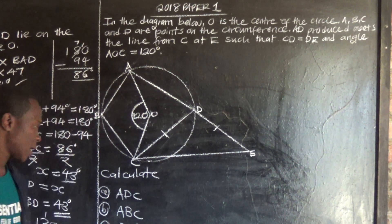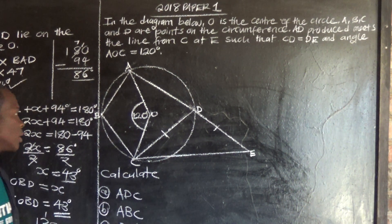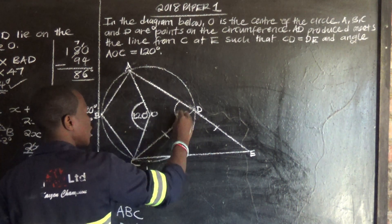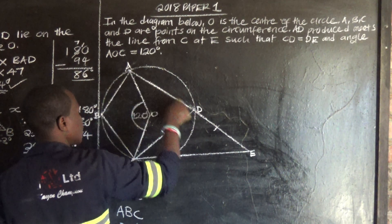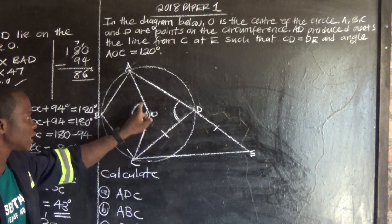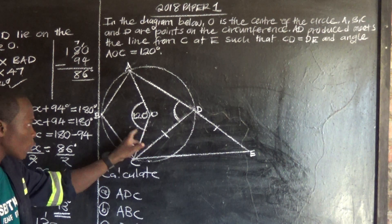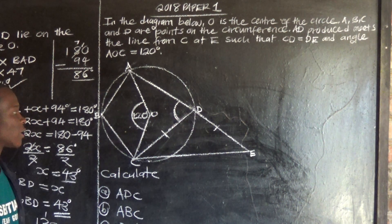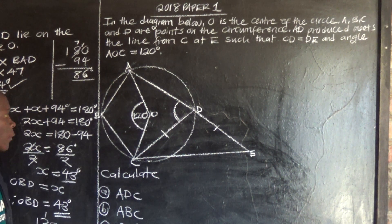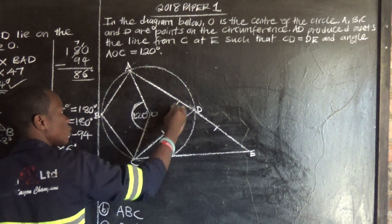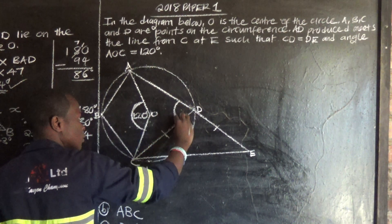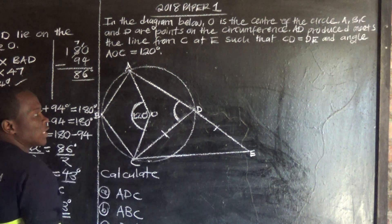The first question is asking us to find angle ADC. We know that this is the angle at the center. The angle at the center is twice the angle on the circumference. The angle at the center is twice the angle on the circumference.